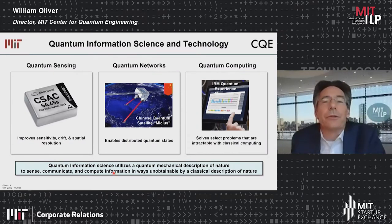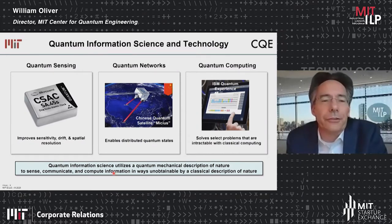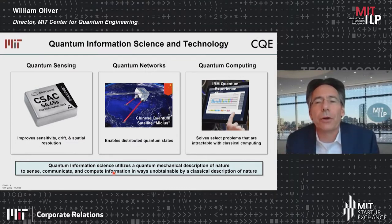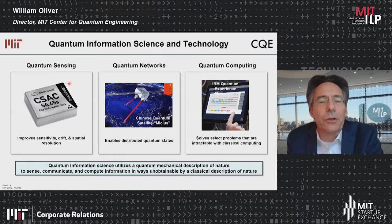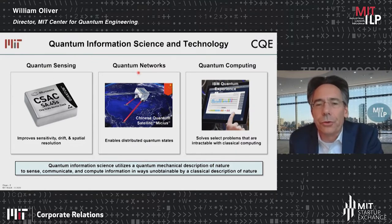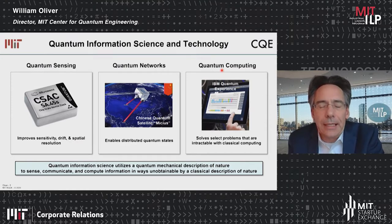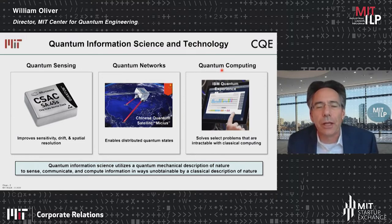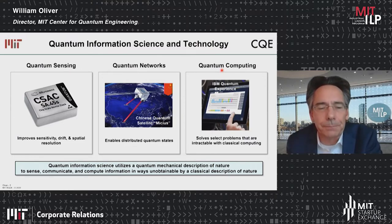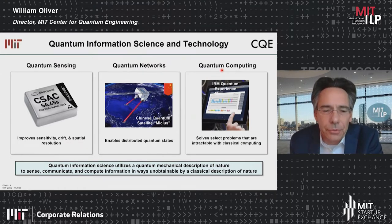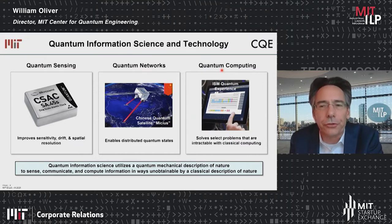It is a very exciting time for quantum information science and technology. Although today's talk is primarily about quantum computing, let me take a step back and say that quantum technologies comprise the sensing of quantum information, its distribution over quantum networks, and the processing of that information with quantum computers. Quantum information science utilizes a quantum mechanical description of nature to sense, communicate, and compute information in ways that are unobtainable by a classical description of nature.